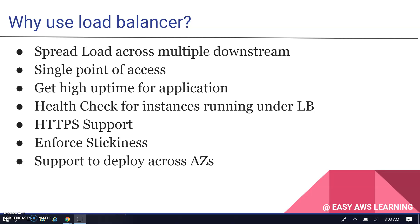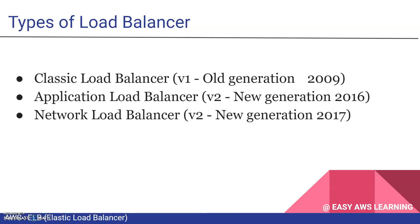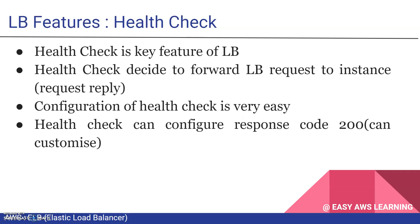There are three types of load balancer. One is the Classic Load Balancer — Amazon calls it v1, the old generation, launched in 2009. AWS always recommends using the Application Load Balancer and Network Load Balancer as the Classic Load Balancer is deprecated. Application Load Balancer is v2, the new generation, launched in 2016. After that, Network Load Balancer was launched — also called v2, new generation — launched in 2017.